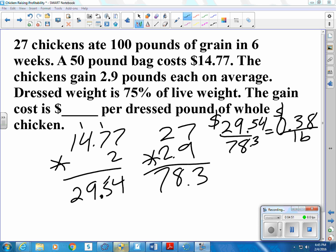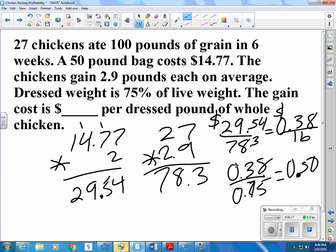And if we divide that by 0.75, because that's how much we get in dressed weight for every pound of live weight. The calculator says that is right around 50 cents per pound dressed weight. It's like you buy at the store.